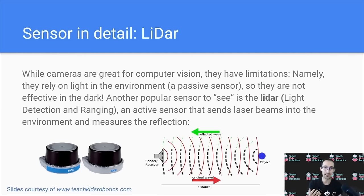So a popular sensor is known as a LiDAR, or light detection and ranging, which is an active sensor that sends laser beams into the environment, and measures the time it takes for the reflection to return.